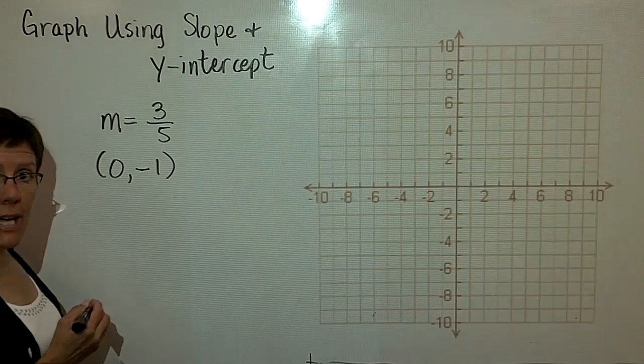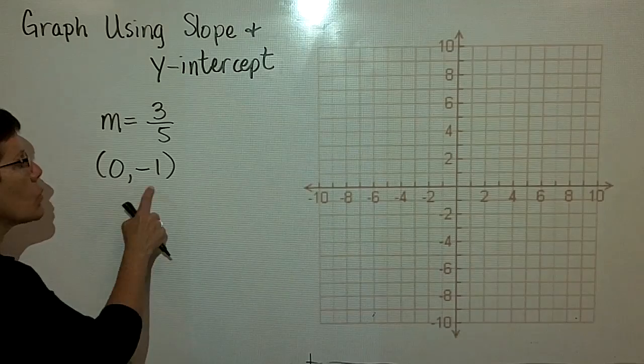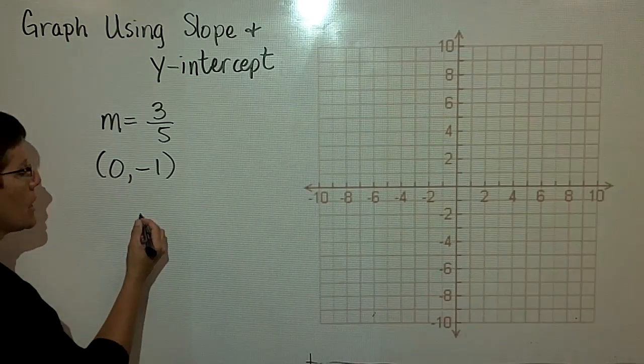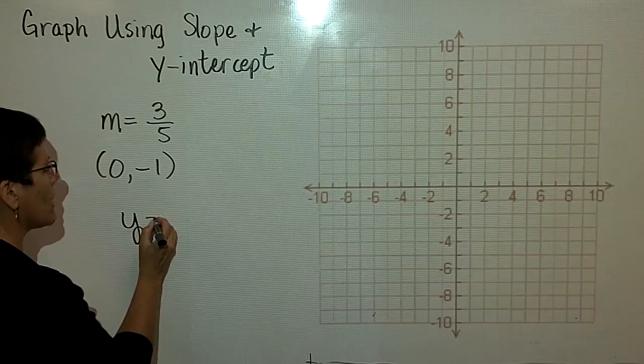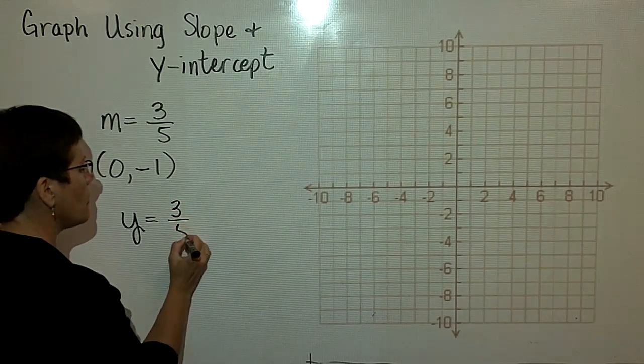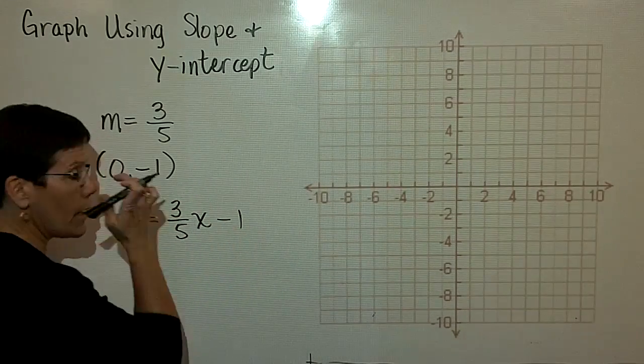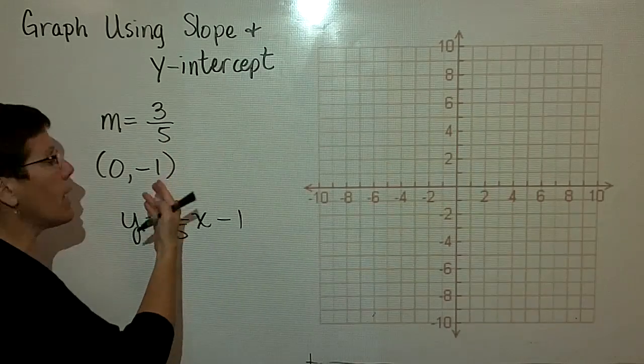Let's say that I give you the slope of a line is equal to 3/5, and its y-intercept is (0, -1). The equation that fits that, or that models that, is y = (3/5)x - 1. To graph that, though, let's use this data.